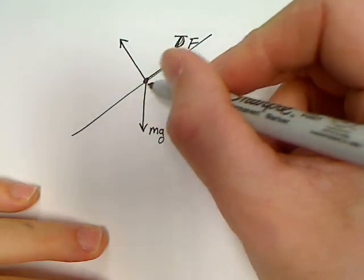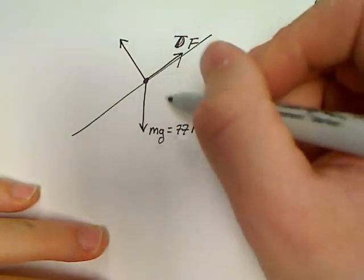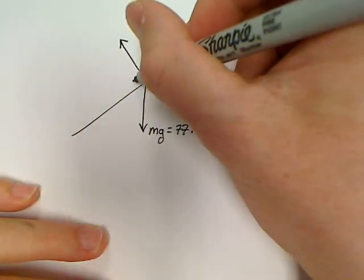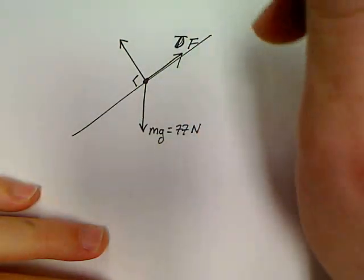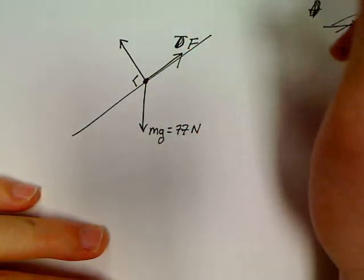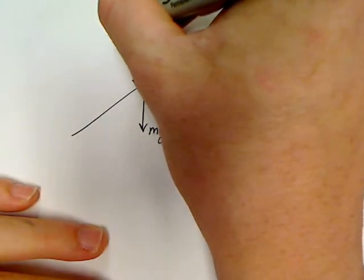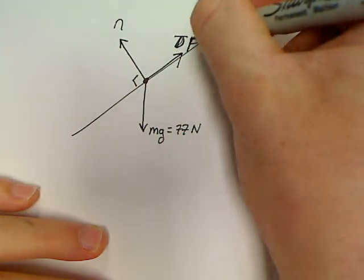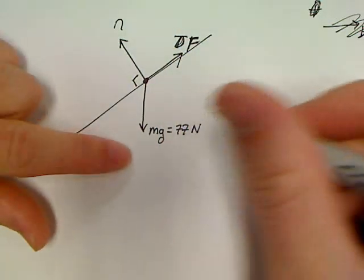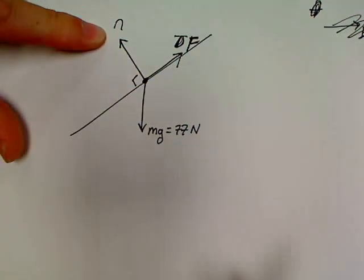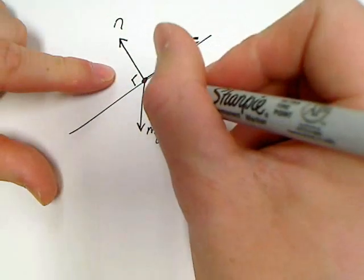Well, if this sled is sitting on top of a hill, then the hill is pushing back against the sled at a 90 degree angle, which is where the word normal comes from. So this is your normal. So we've got a force. We've got a weight. We've got a normal. Now, I don't want to draw my free body diagram at an angle on this hill.